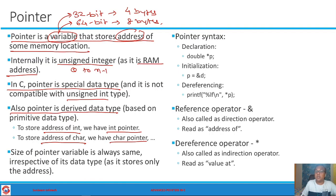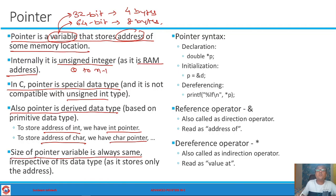Even though a character takes only one byte, to store the address of a character you still need four bytes or eight bytes depending on your platform. Even though a short takes two bytes, a pointer to short will take four or eight bytes depending on the platform. Always understand that the pointer variable size will always be the same irrespective of its base data type.